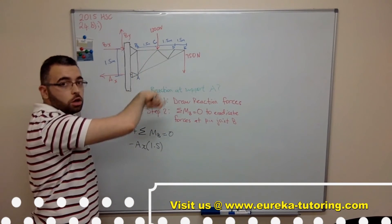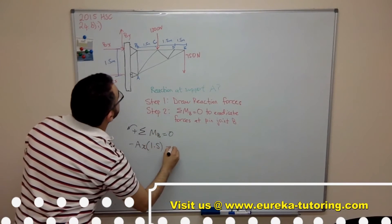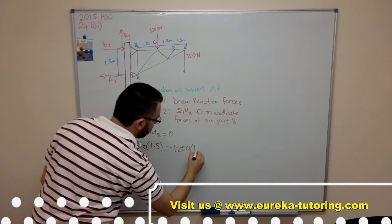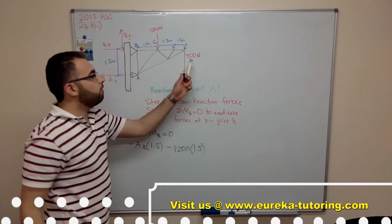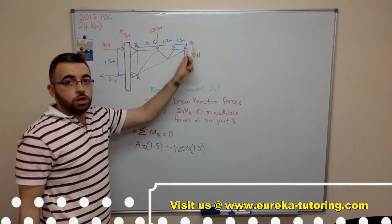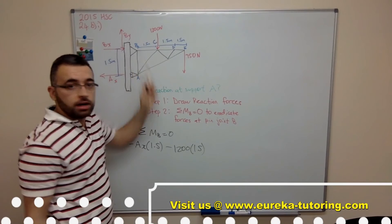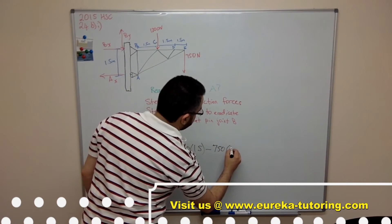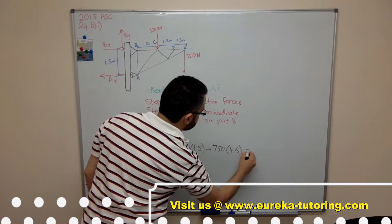We've got this force also going in the clockwise direction. So negative 1,200 times the perpendicular distance 1.5, and we have this final force 750 times the perpendicular distance which is 4.5. So minus 750 times 4.5 equals zero.